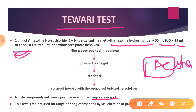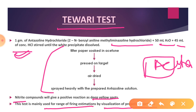Jab GSR ke particles filter paper par aa jaate hain aur dry ho jaate hain, tab prepared solution ko uske upar spray karna hota hai. Agar deep yellow spots bante hain, to ye dikhata hai ki nitrite compounds present hain — positive result. Agar deep yellow spots nahi dikh rahe to result negative hai, aur GSR ke particles present nahi hain. This test is mainly used for the detection of range of firing by visualization of propellant particles.